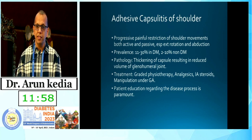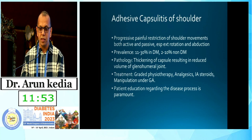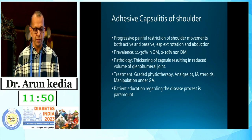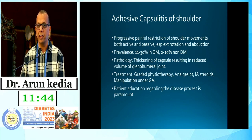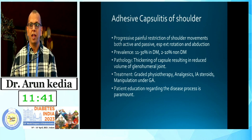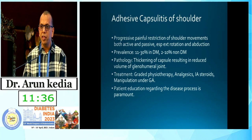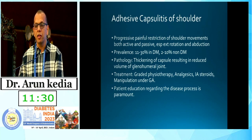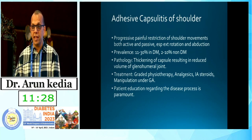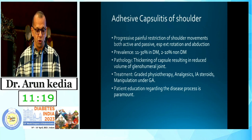The most common condition we see in day-to-day life is adhesive capsulitis of the shoulder, or frozen shoulder — a progressive painful restriction of shoulder movements. Both active and passive movements are involved, especially external rotation and abduction. Just imagine if a person cannot abduct their shoulder — women come to us unable to unbutton their blouses or wear their inner garments. The prevalence can be as high as 30% in diabetes patients, compared to 2–10% in non-diabetic patients.